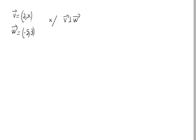Given the vectors v = (2, x), that means that we have an unknown value x, and w = (-5, 3).